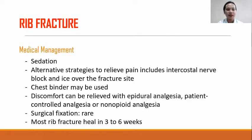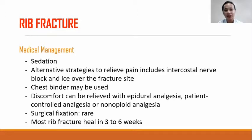Medical management: sedation to reduce pain and allow deep breathing and coughing. Alternative strategies to relieve pain include intercostal nerve block and ice over the fracture site. A chest binder may be used as a supportive treatment to provide stability to the chest wall. Discomfort can be relieved with epidural analgesia, patient-controlled analgesia, or non-opioid analgesia. Surgical fixation is rare because most rib fractures heal within three to six weeks.